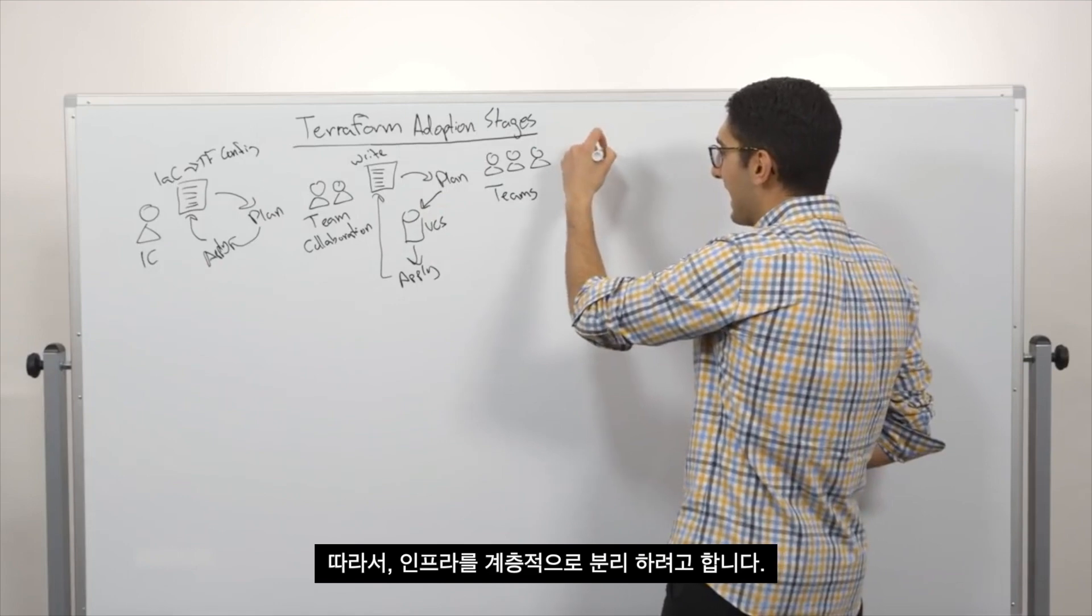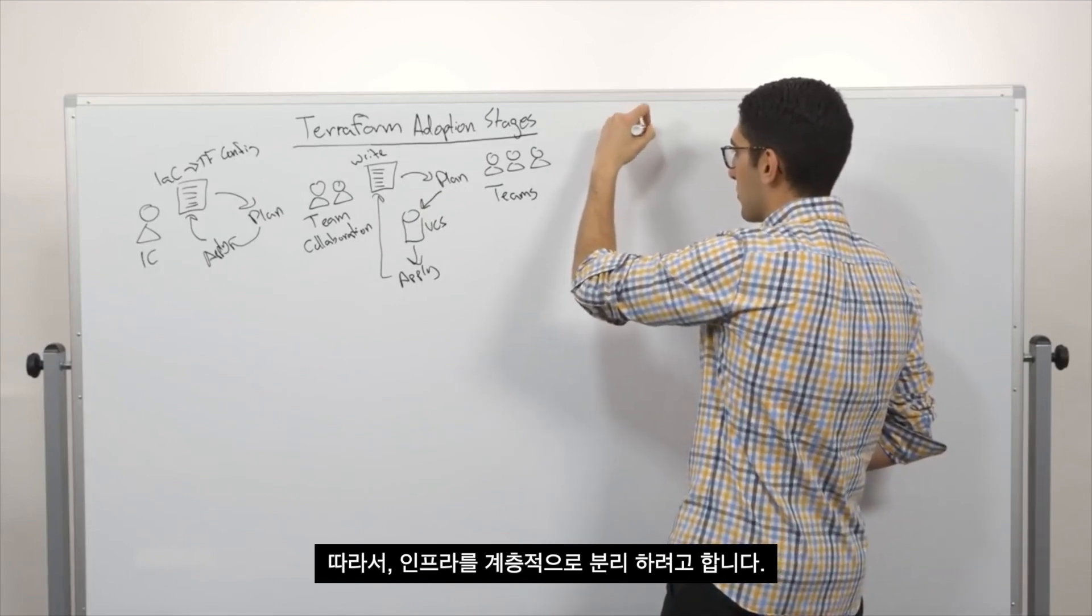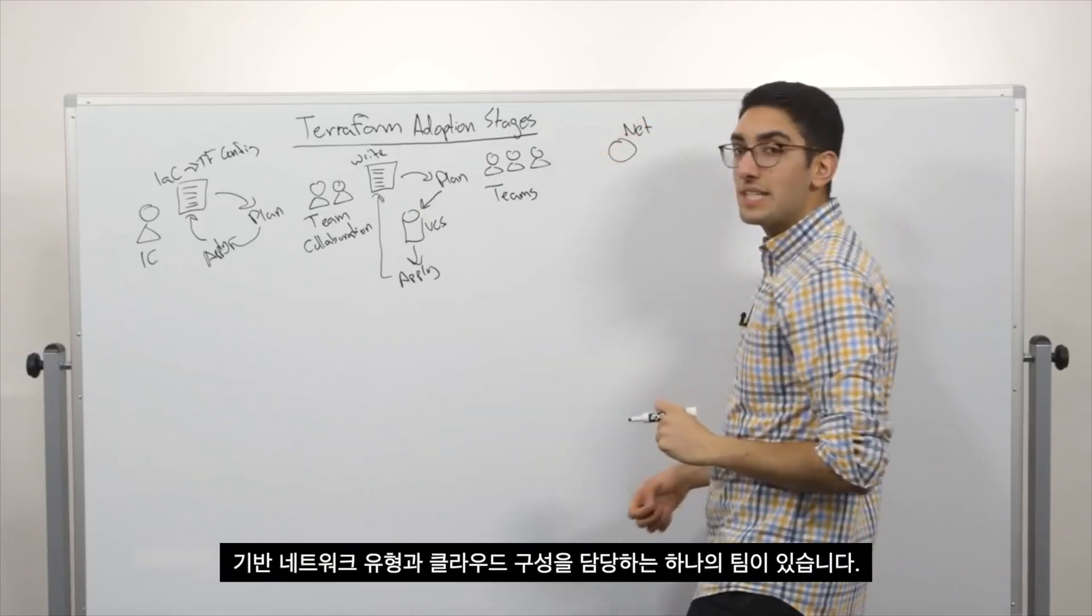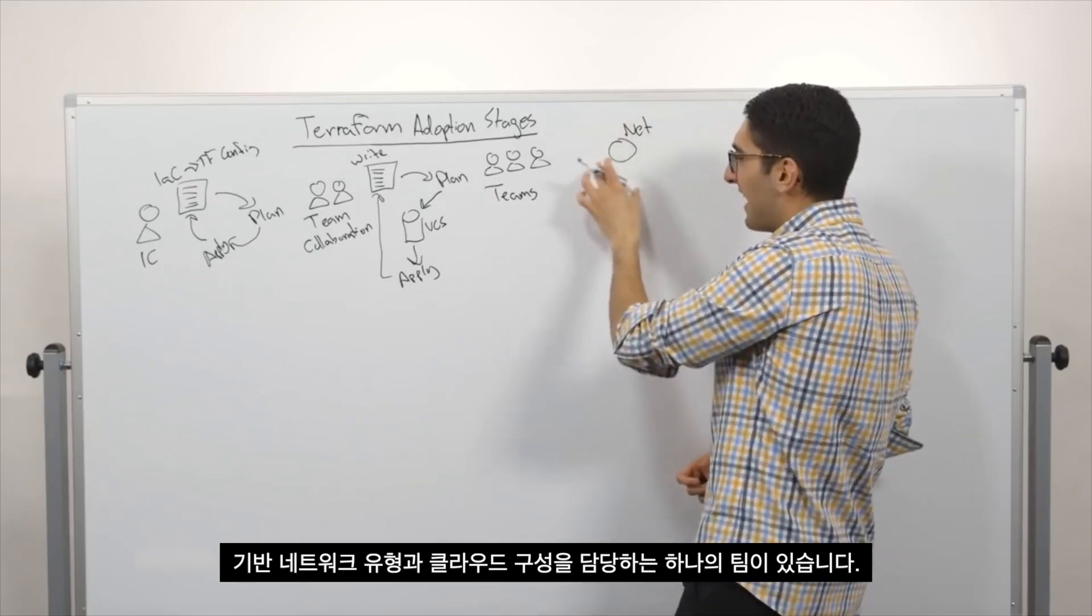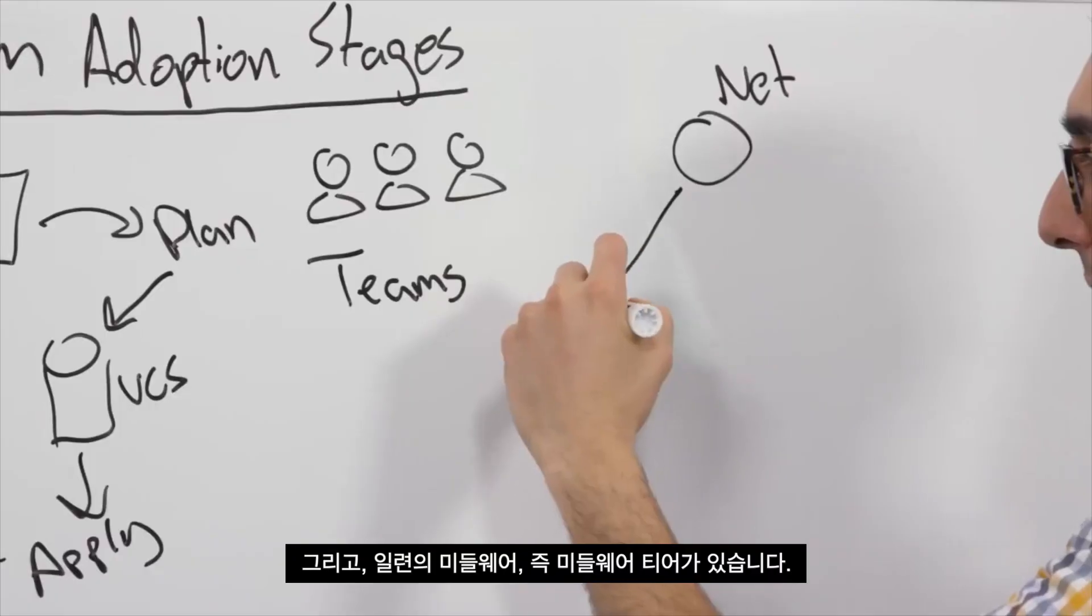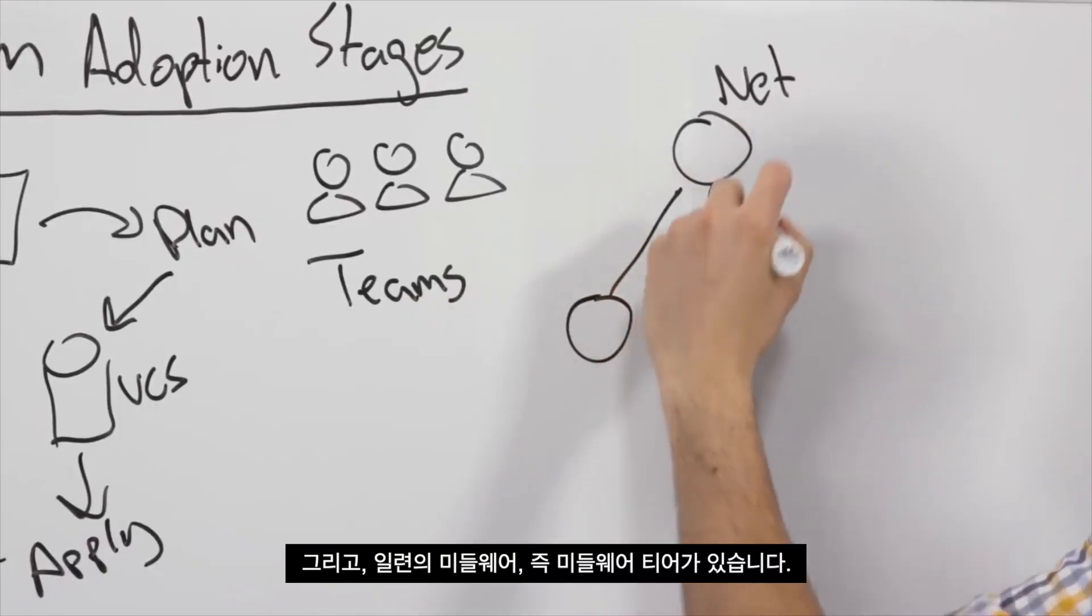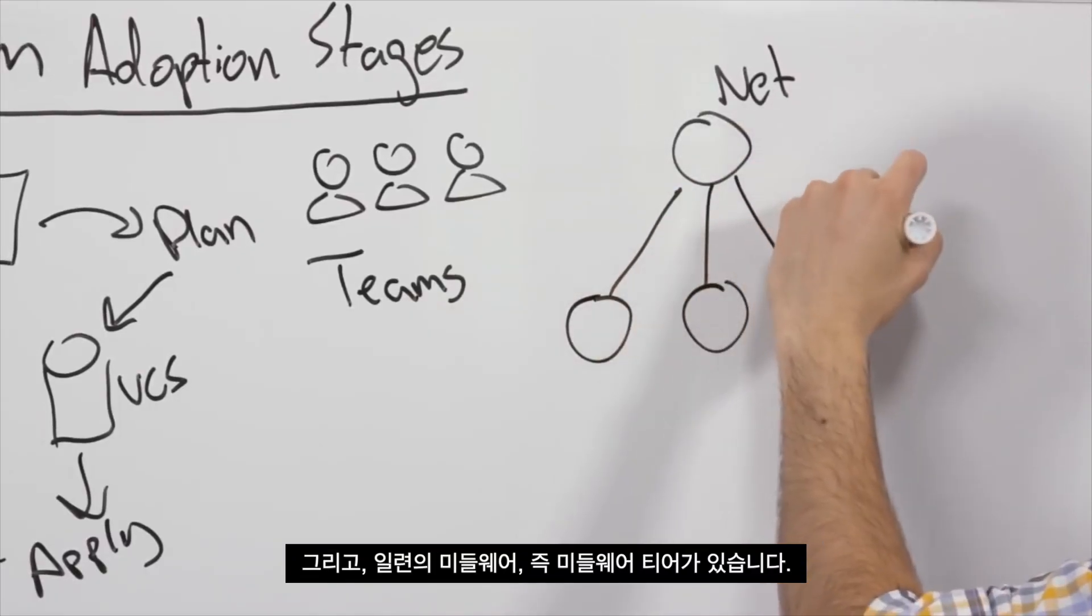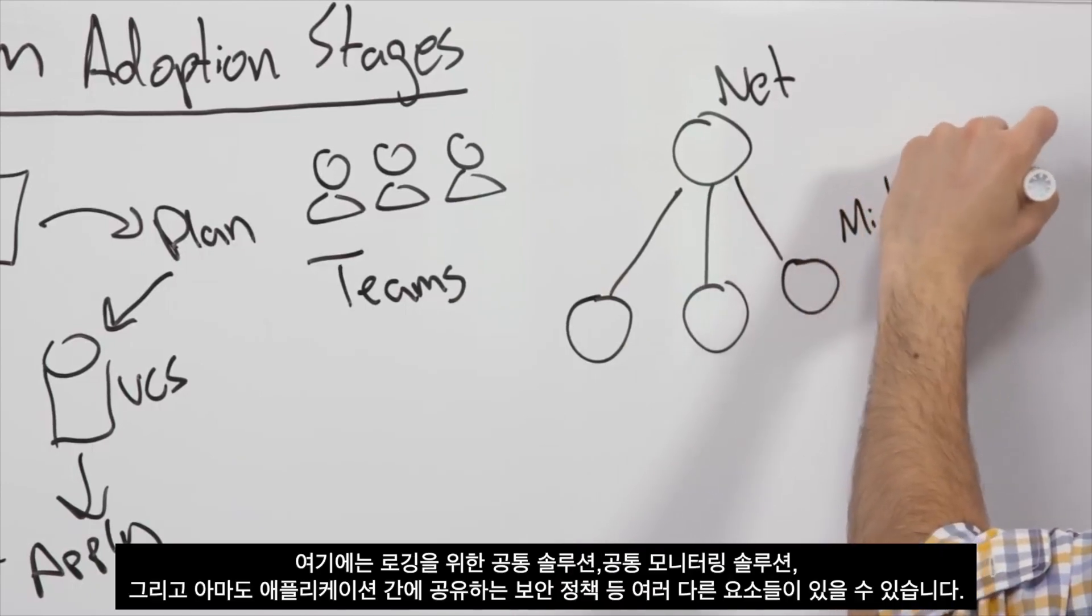So instead what we'd like to do is hierarchically decompose our infrastructure. We might say we have one team that focuses on the underlying network topology and cloud configuration. Then we might have a series of middleware. So we might have a middleware tier.